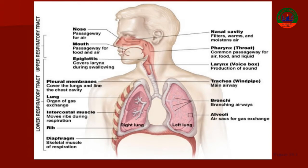The airway is divided into two types: upper airway and lower airway. The upper airway comprises the mouth, nasopharynx, oropharynx, pharynx, and larynx.